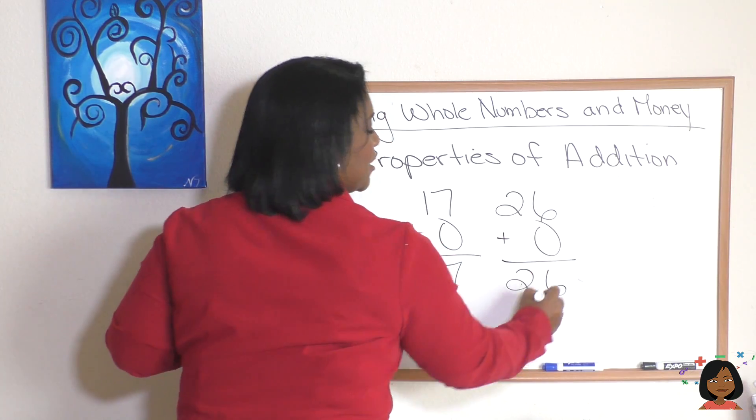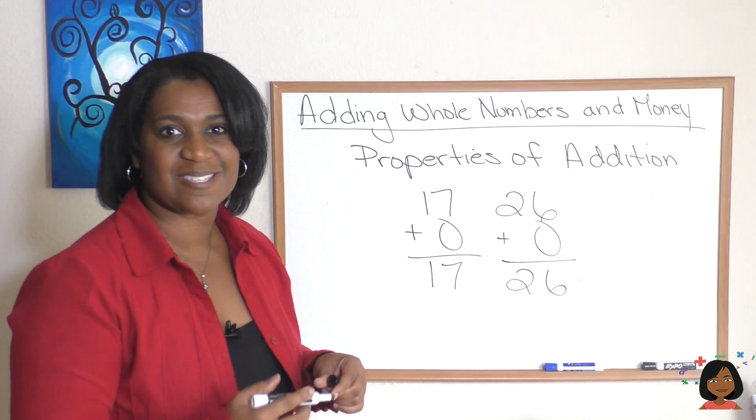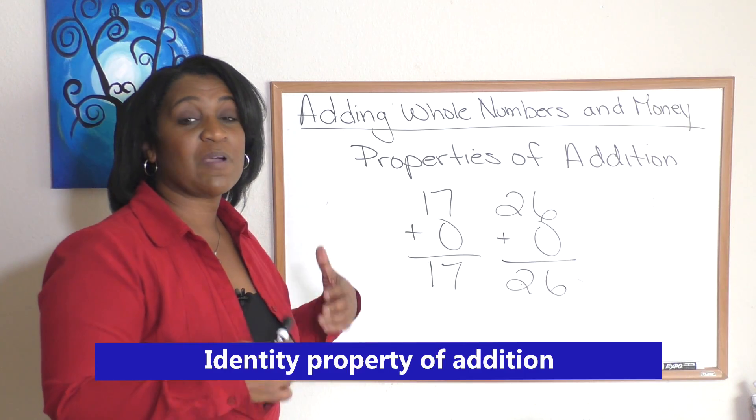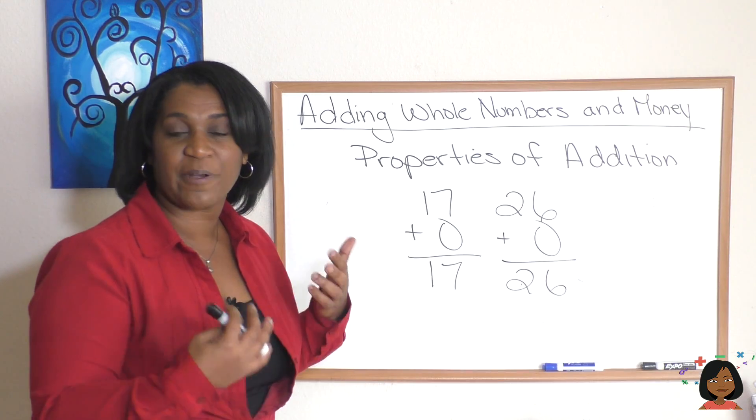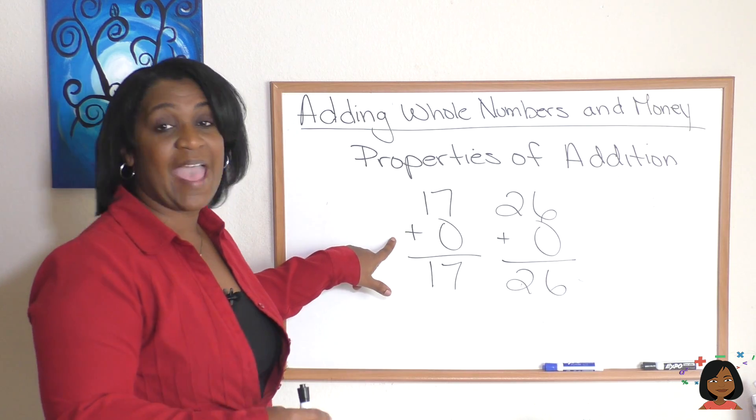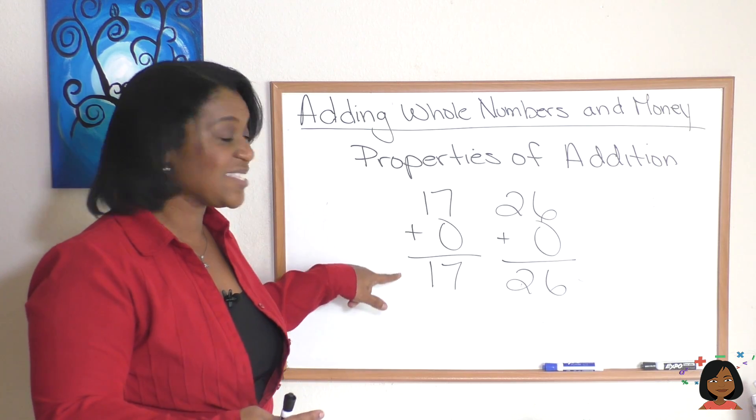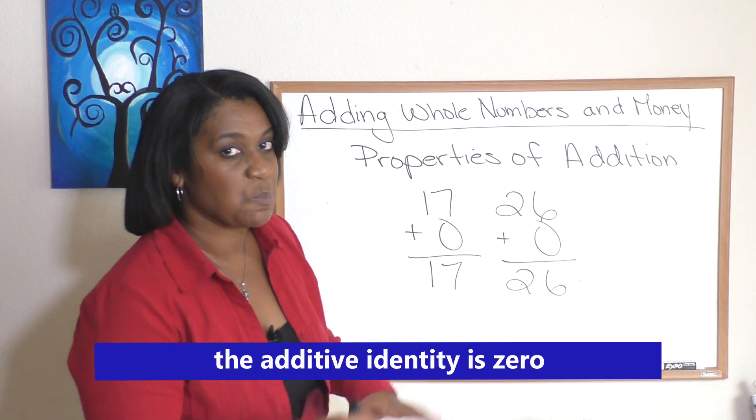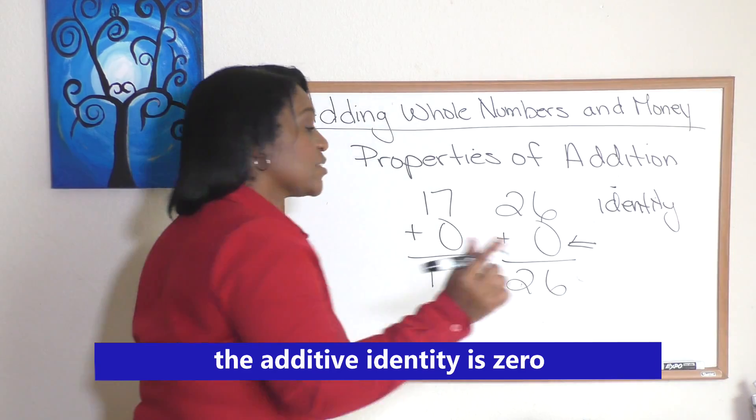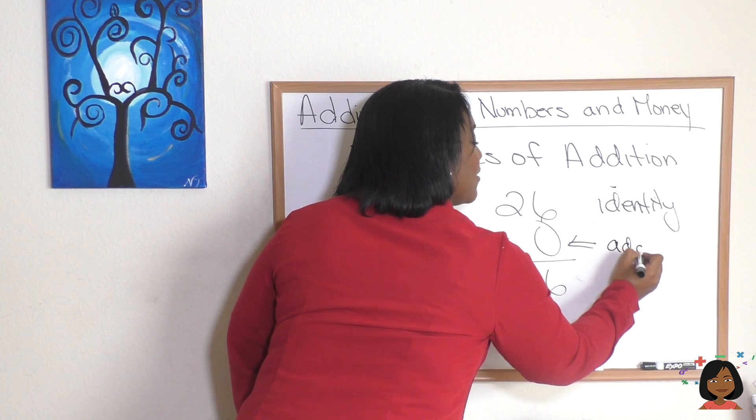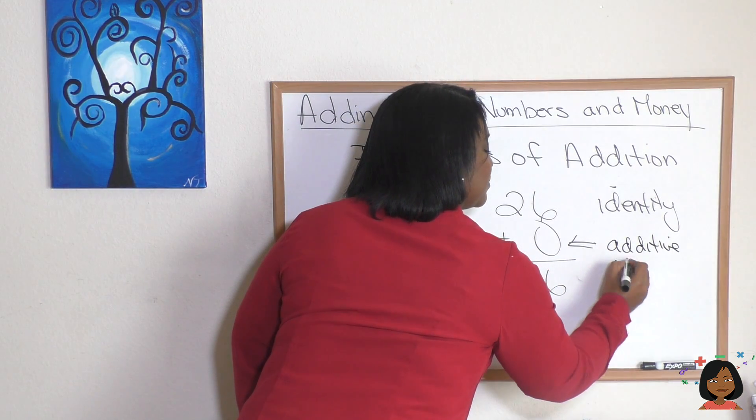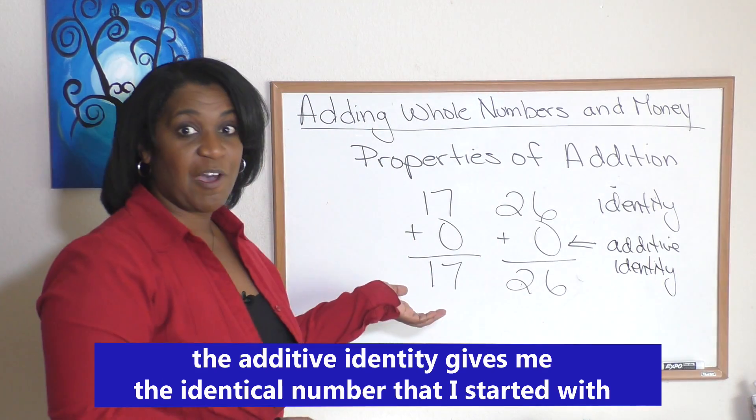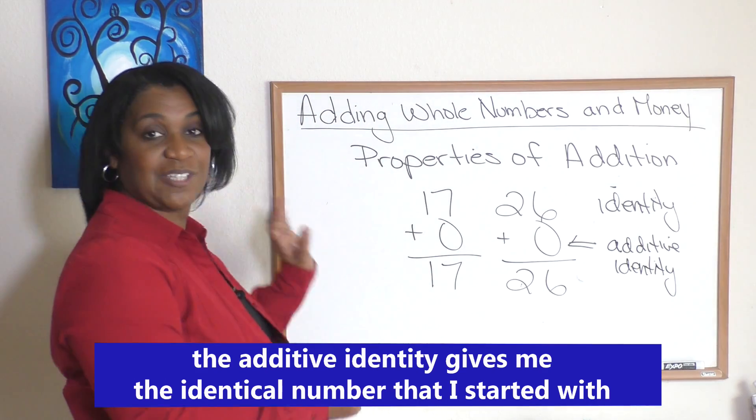So in math zero represents the identity property of addition, meaning that when I add zero to a number my sum is the identical number that I started with, which is where we get identity. And zero is called the additive identity since it's zero that gives us this special condition where we end up with the identical number we started with.